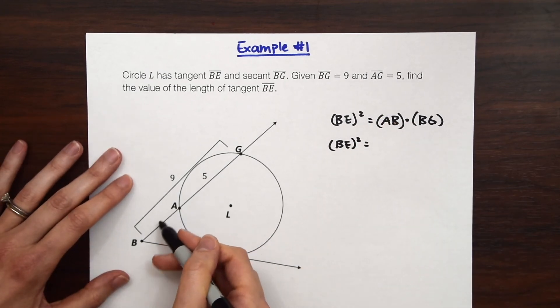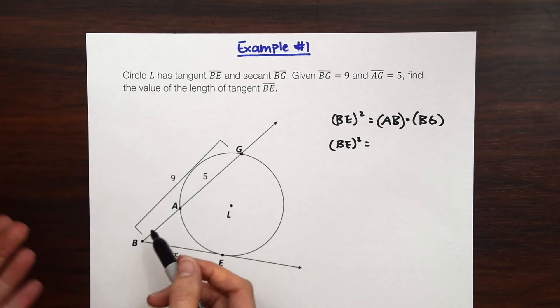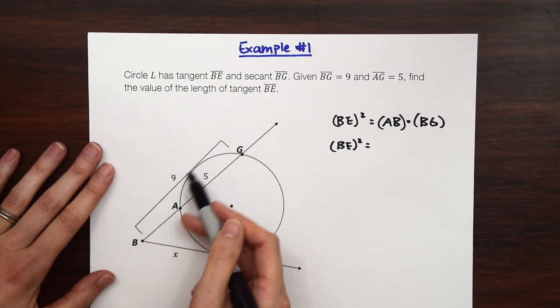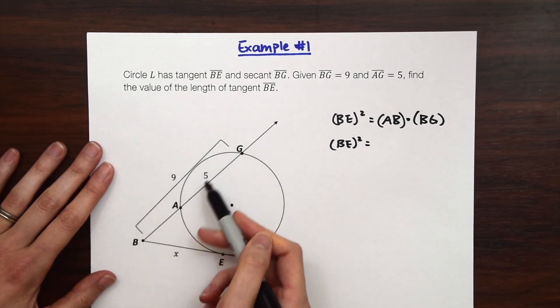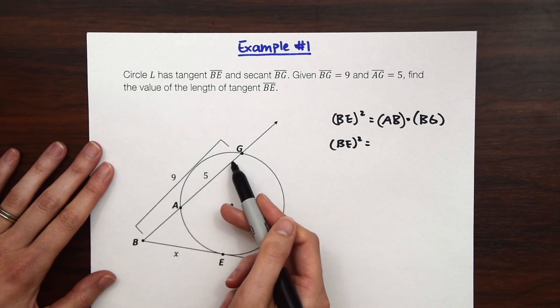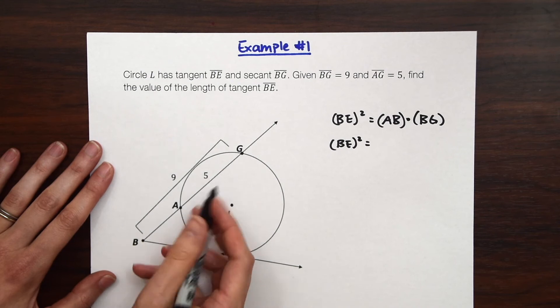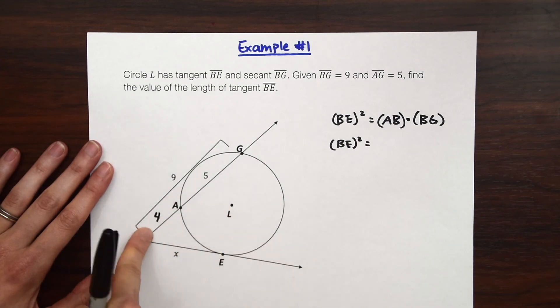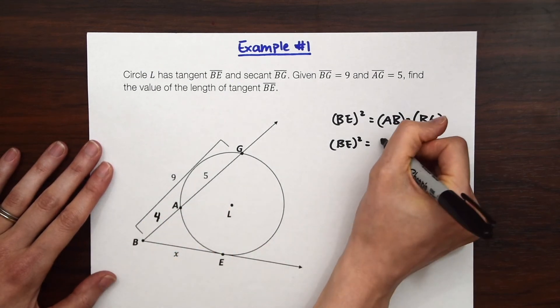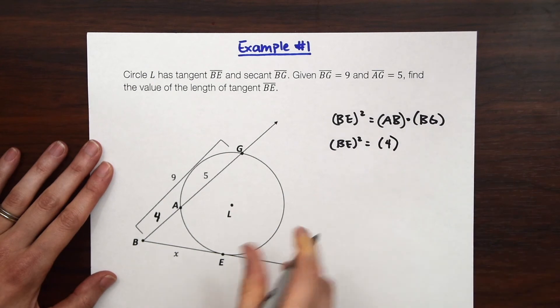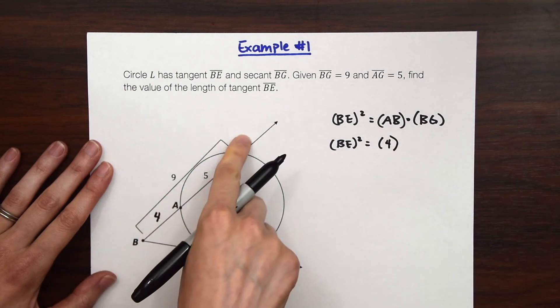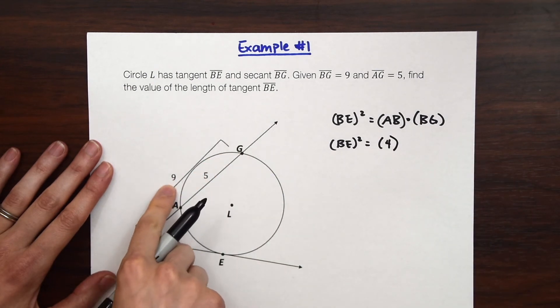And then what is the value of AB? So to find that we have the value of the entire length BG and then we have part of the length AG. So we're just going to subtract 9 minus 5. What's left over? 4. So we know that this is 4. So AB is equal to 4 times BG. So now that's the length of the whole secant which is just 9.